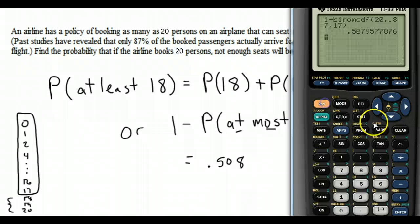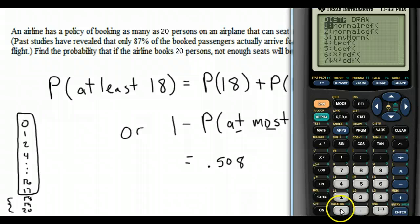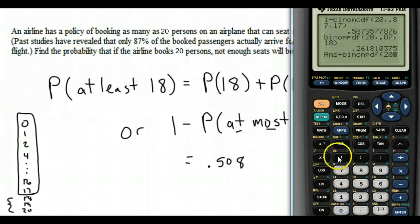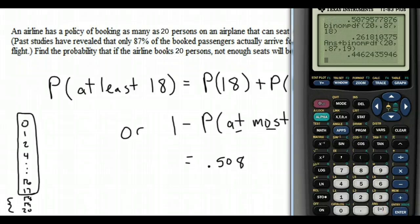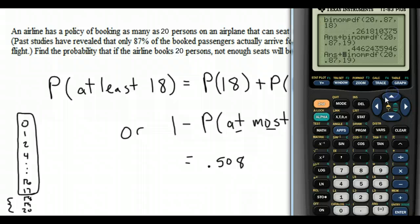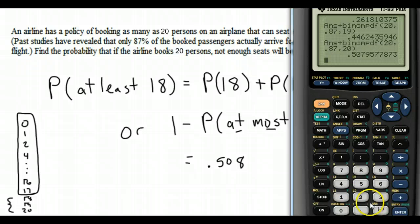Now you could also do this just using the binomial PDF. Binomial PDF, they booked 20 seats, 0.87 is the probability somebody shows up. And just start at 18. And then add a second binomial PDF. 20 seats, probability of 0.87 that somebody shows up. And then 19, we're just going all the way up to 20. And then second enter brings back the last thing I just did. And then change that 19 to a 20.